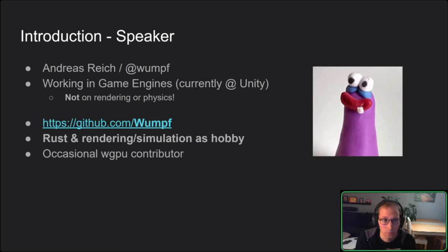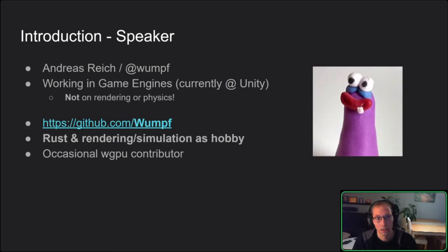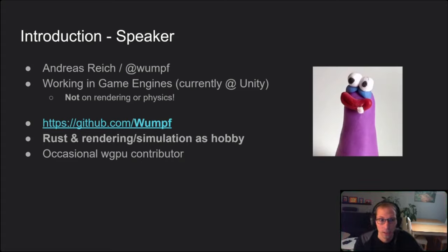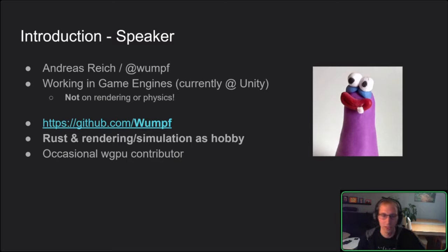You can find me online as Wumpf, usually on Twitter and GitHub. I've been working for Koala for a while in game engines, and currently I'm working for Unity. Everything I'm showing today is a hobby project — I've never been professionally working on rendering or physics. I also occasionally contribute to WebGPU, which the whole project is based on.